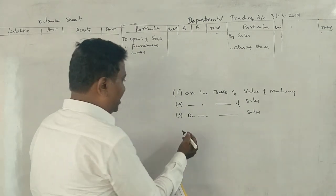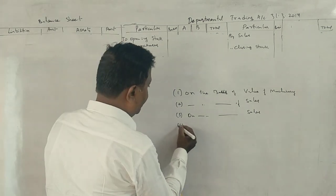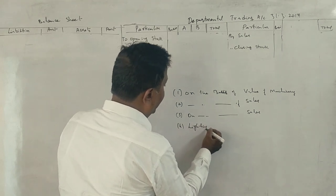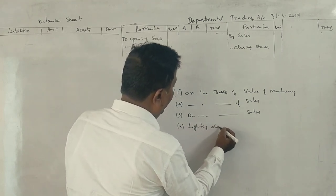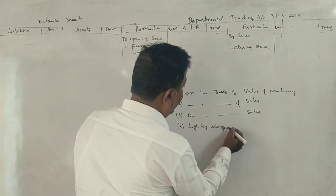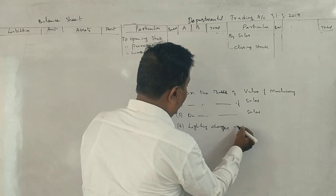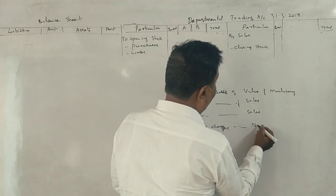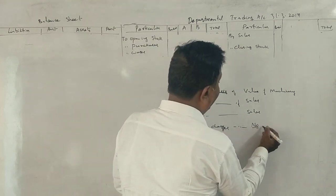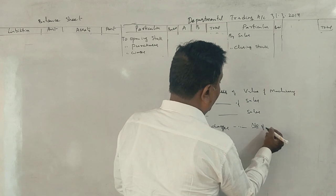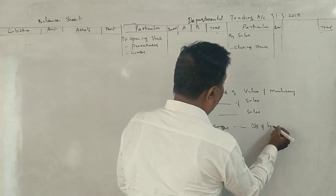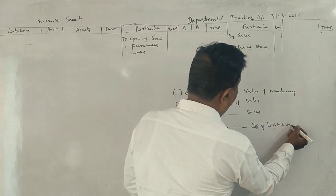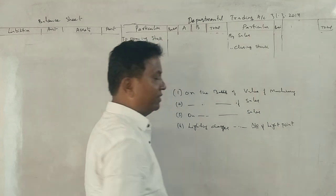Next: lighting charges. Lighting charges are allocated on the basis of the number of light points in each department. Number of light points in each department is the correct basis.